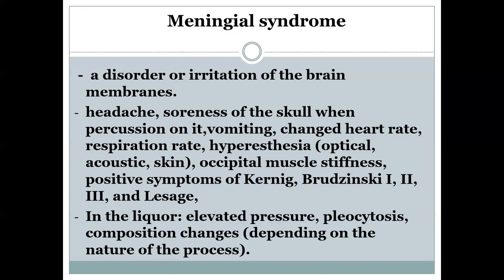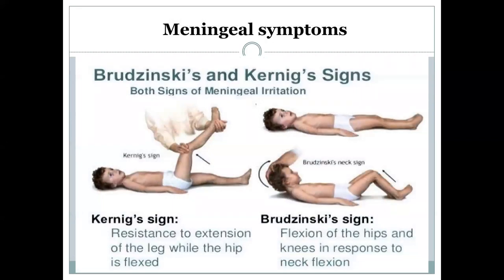These are the most common complaints and findings in a person with meningeal syndrome. If we take the cerebrospinal fluid for examination, we can find elevated pressure and a large number of cells inside it, causing pleocytosis, along with composition changes depending on the nature of the process. The most demonstrable signs are Brudzinski and Kernig signs.